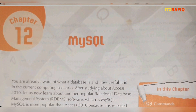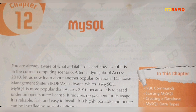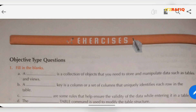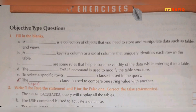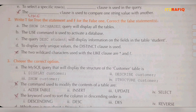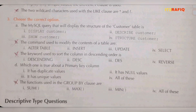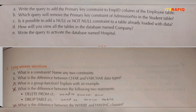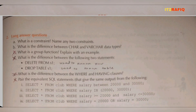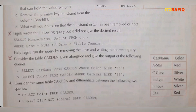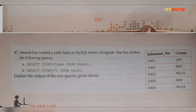Chapter 12: MySQL. Fill in the blanks, number F is not required. True and false, number E is not required. Choose the correct, only A and D are required. Short answers, number C — all are required. Long answers, only A and B are required. From application based, question 2, 3, and 5 are not required.